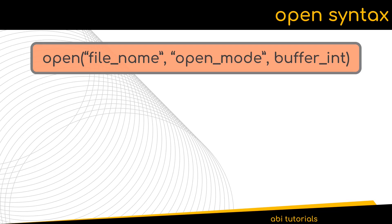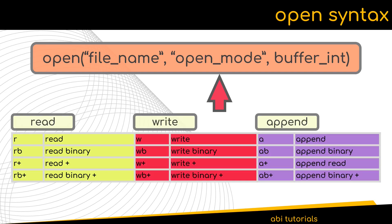The syntax of the open function takes a first parameter which is the name of the file. If the file resides in the same path as the program, you just need to mention the file name. If the file is located in a different directory, you will have to provide the full path. The second parameter determines the mode in which the file should be opened. There are multiple modes available: R for read, W for write, and A for append, along with other combinations mentioned in the table.